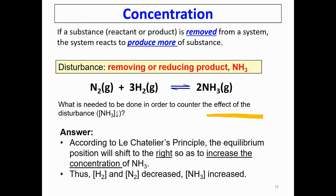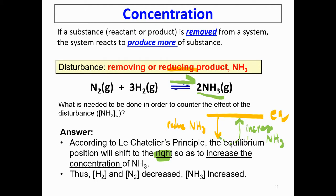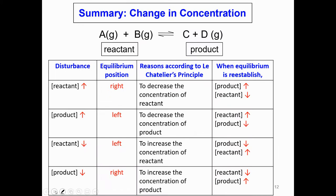Now consider removing or reducing a product — ammonia. Starting from equilibrium, reducing means going down, so we have reduced ammonia. To get back to equilibrium, the action is to go up, meaning I need to increase ammonia. I shift to the right because on the right-hand side I have ammonia, so as to increase the concentration of ammonia. Here is a summary table of what happens when the concentration of reactant or product is increased or decreased.